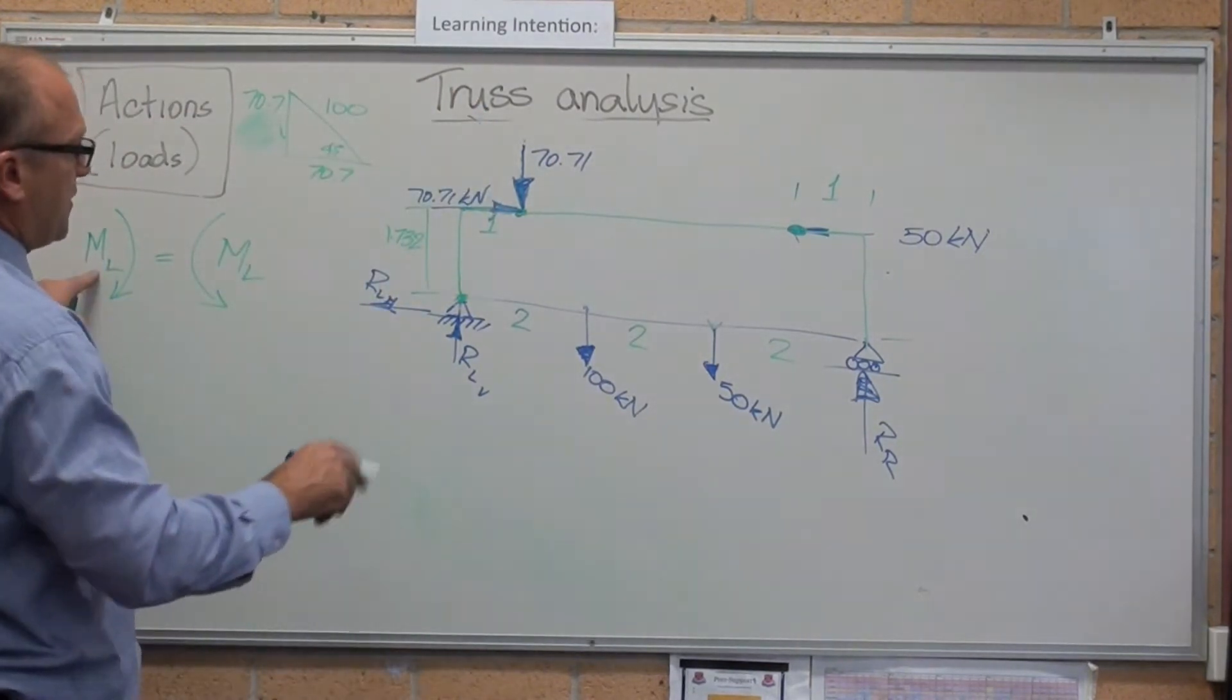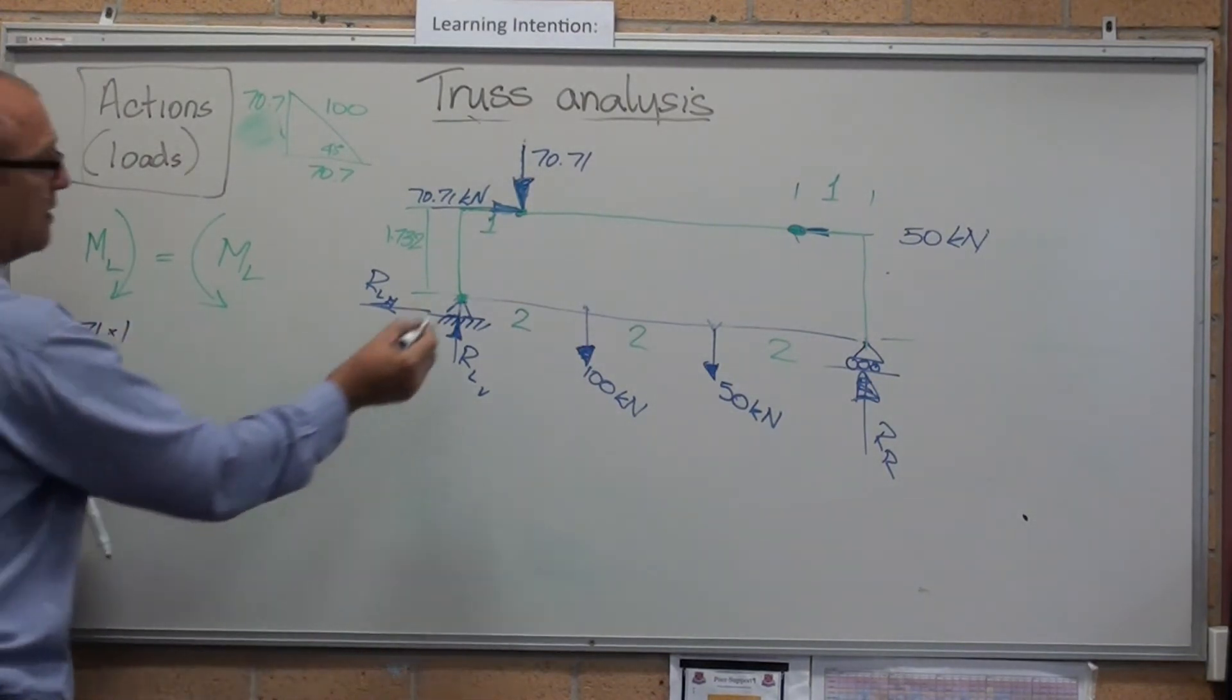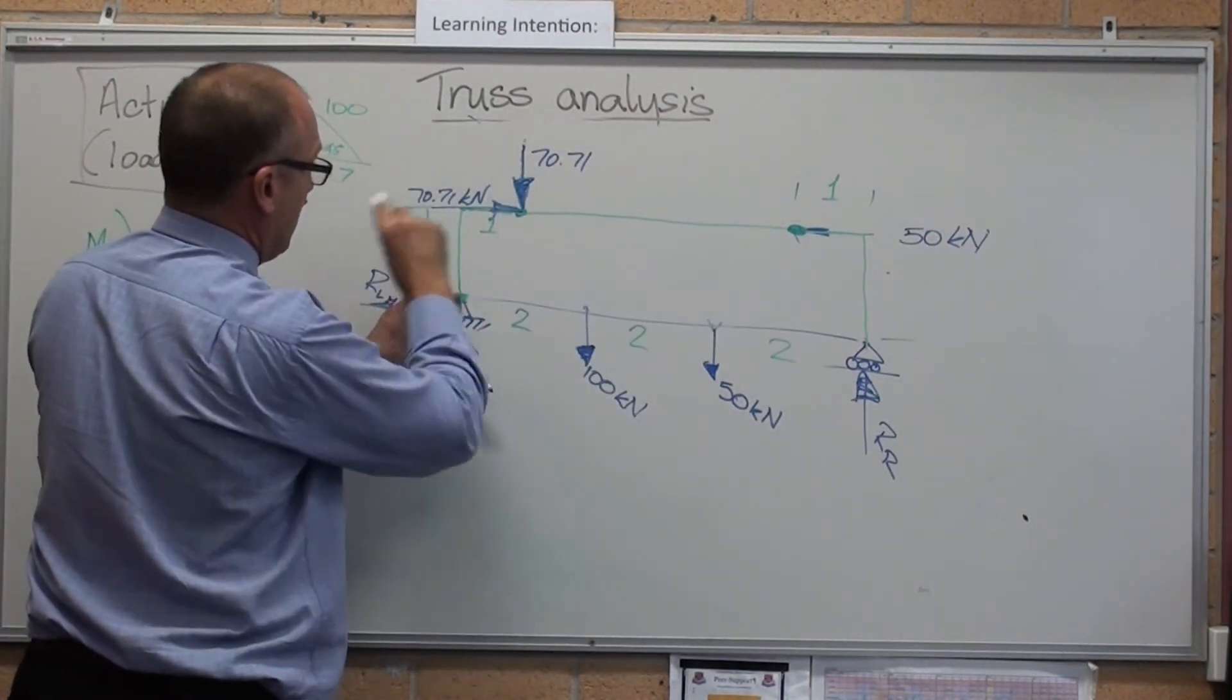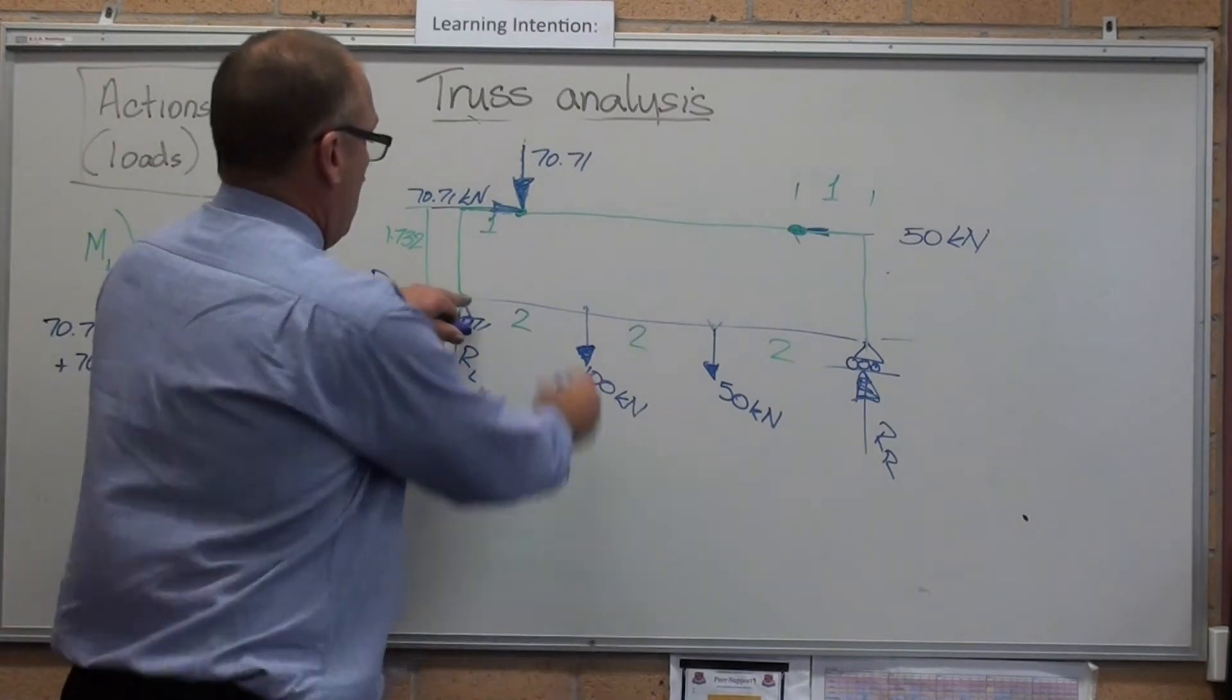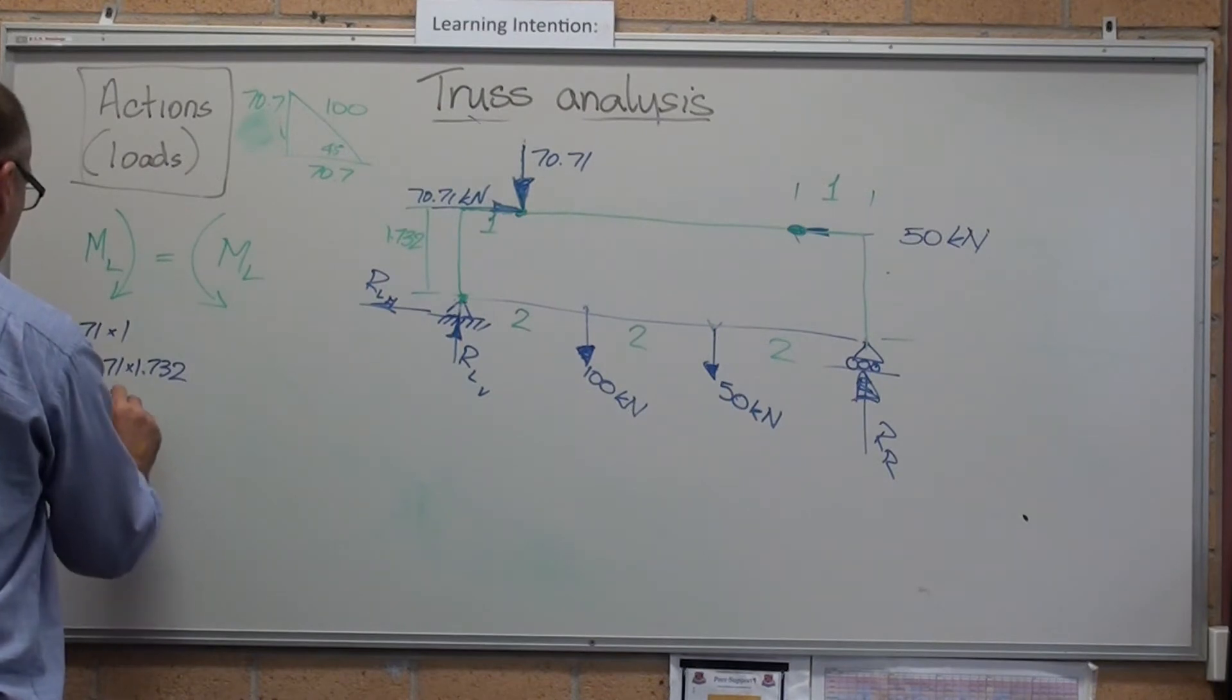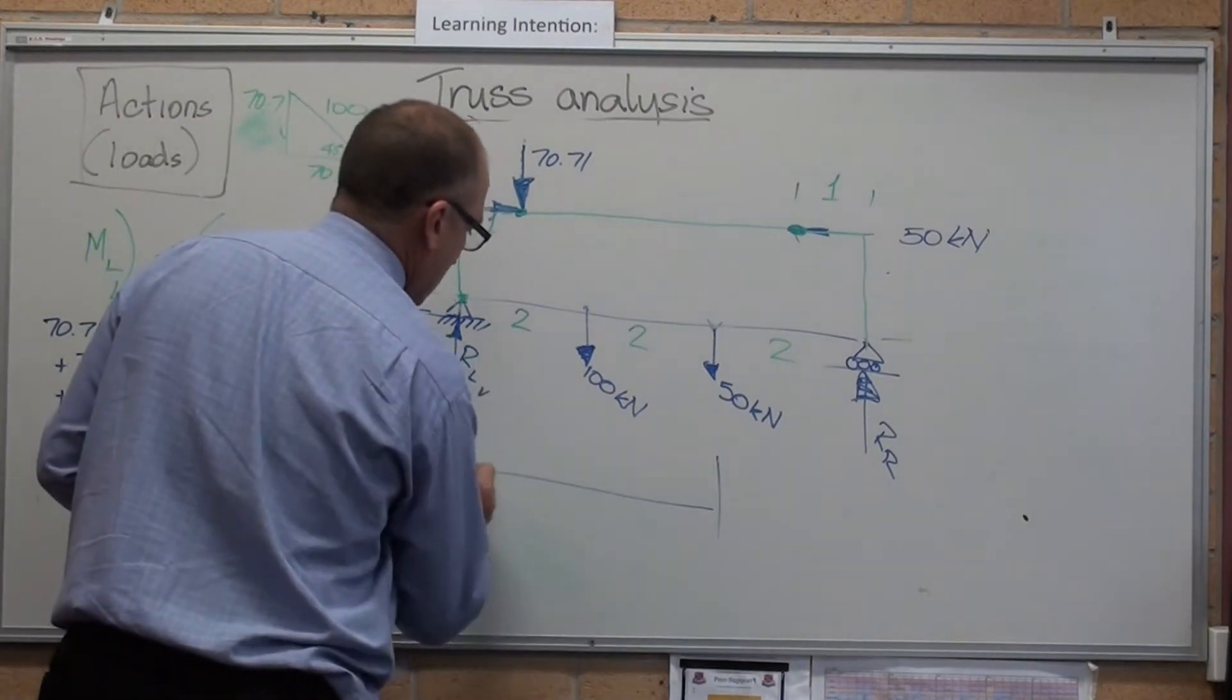Moments about left going clockwise. It's 70.71 times 1 metre. This one. This one. This one is making it go clockwise as well around there. So it's plus 70.71 times 1.732. Thank God I've got a calculator. Plus 2 times 100. Plus 4 metres times 50. Distance from there to there. Distance from there to there is 4.